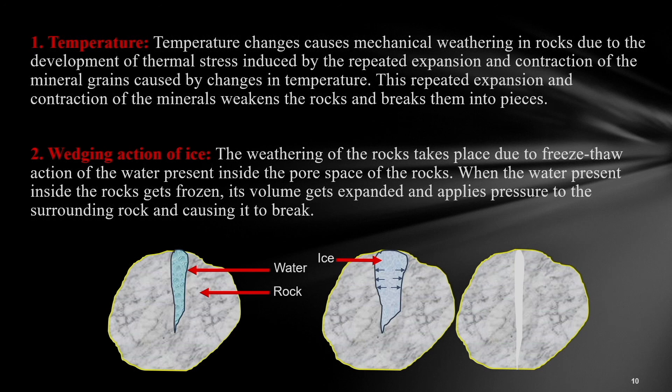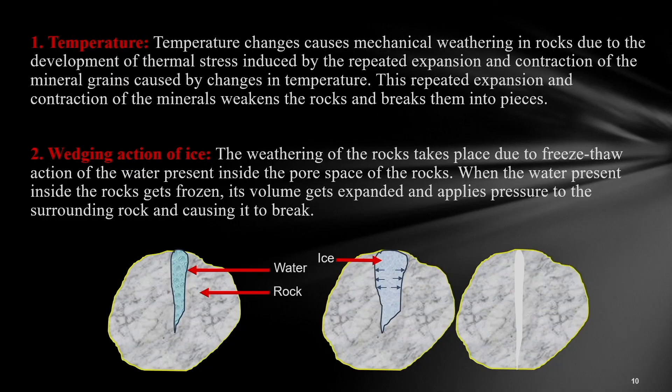Temperature is one of the most important factors causing soil formation. Rock has different minerals, and different minerals have different coefficients of volumetric expansion. When temperature increases, the volume of the rock increases; when temperature decreases, the volume decreases. If this process of expansion and contraction takes place over a long time, thermal stress is induced in the rock. Because of this stress, the soil minerals weaken and the rocks break into small pieces.